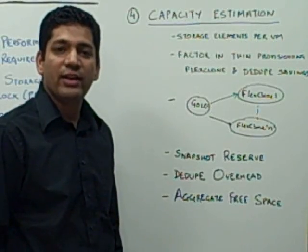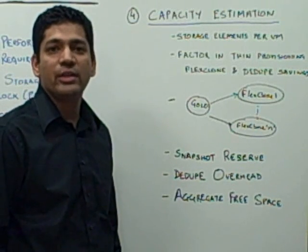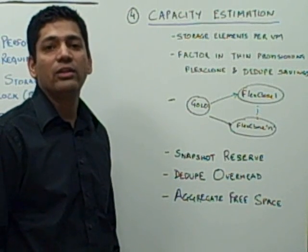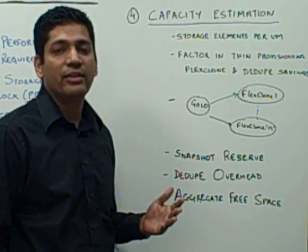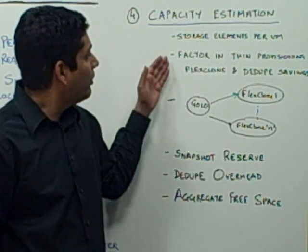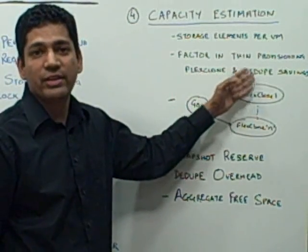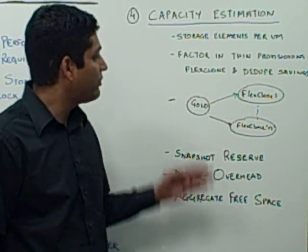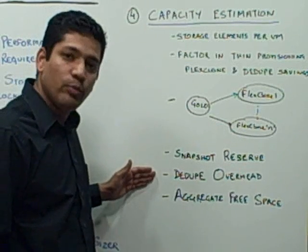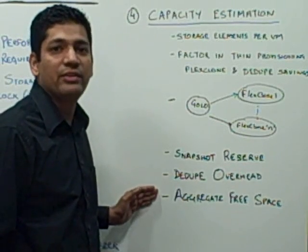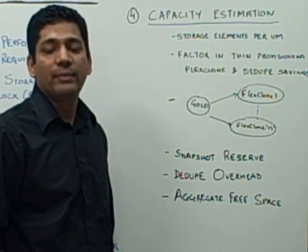Capacity estimation means getting an understanding of the total number of spindles required to meet capacity needs. This largely depends on the size of the virtual machine and all the files that make up a VM, like the VMDK file, the vSwap file, and other non-VMDK files. Next, consider thin provisioning, FlexClone, and dedup savings to determine the total storage required for the gold and FlexClone volumes. Also factor in snapshot reserve, dedup overhead, and aggregate free space. This exercise gives you an estimate of the total number of spindles needed to meet capacity needs.